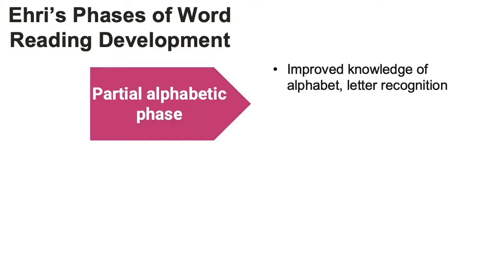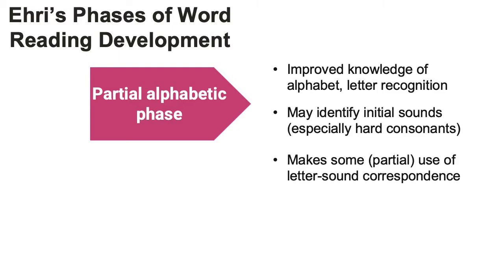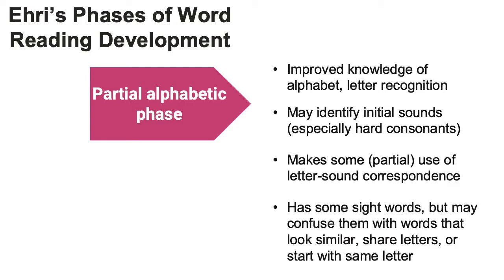In the second phase, the partial alphabetic phase, children are improving and expanding their knowledge of the alphabet in sequence, as well as starting to identify individual letters within words. Even though they're not decoding the whole word yet, this is why it's called the partial alphabetic phase. In this phase, children have learned a few sight words, but when they see them in text, they may often confuse those words with words that look similar, share letters, or start with the same letter.